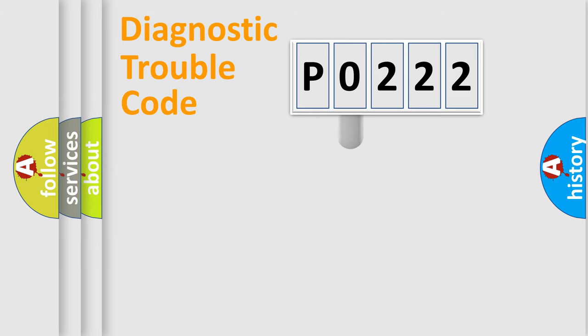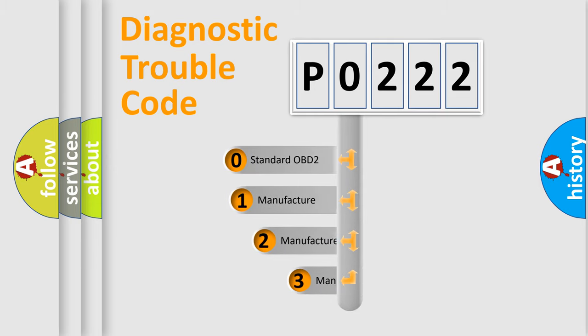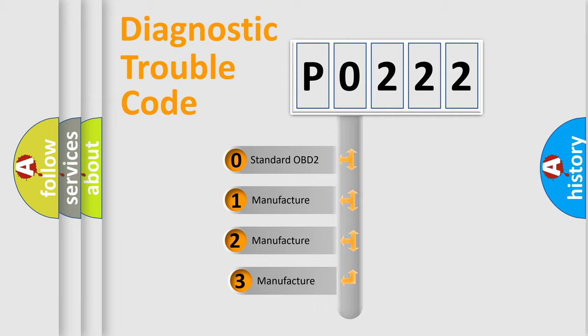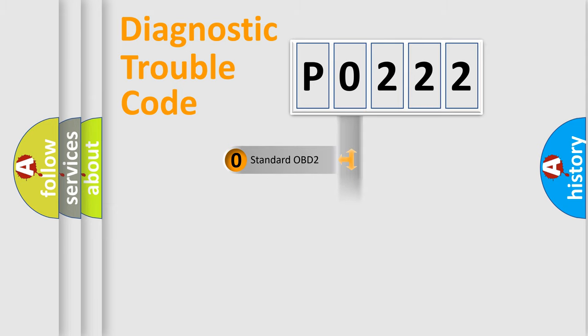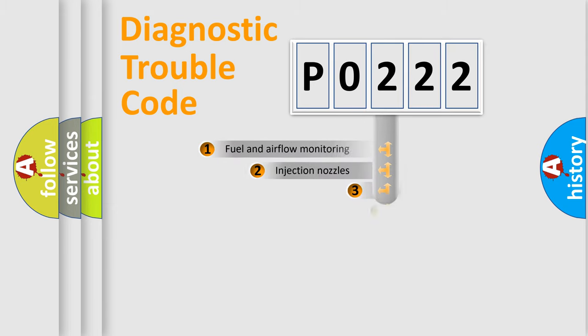This distribution is defined in the first character of the code. If the second character is expressed as zero, it is a standardized error. In the case of numbers 1, 2, or 3, it is a more specific expression of a car-specific error.